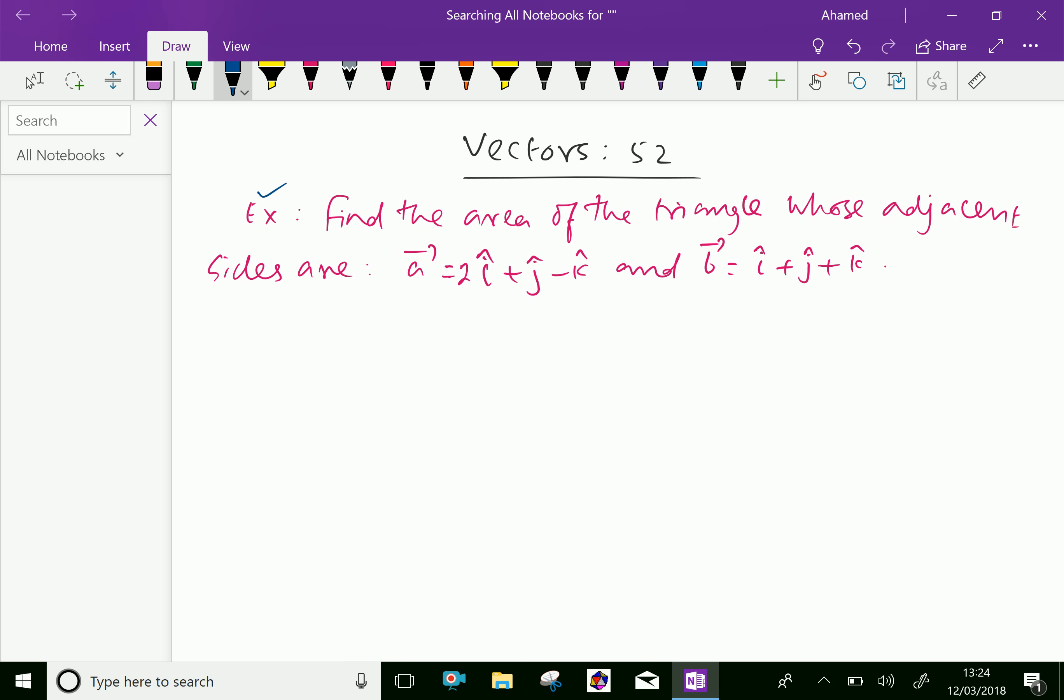Example: find the area of triangle whose adjacent sides are vector a equal to 2i plus j minus k and vector b equal i plus j plus k.